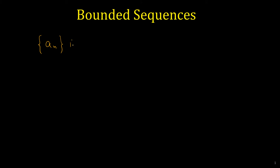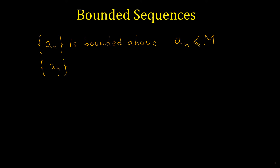In this video I'm going to show you what is a bounded sequence and how we can figure out if a sequence is bounded or not. The sequence A sub n is bounded above if all elements of this sequence are less than or equal to a fixed number like m. The sequence is bounded below if all the elements are greater than or equal to a number like m. And if the sequence is bounded above and bounded below, then we say that the sequence is bounded.